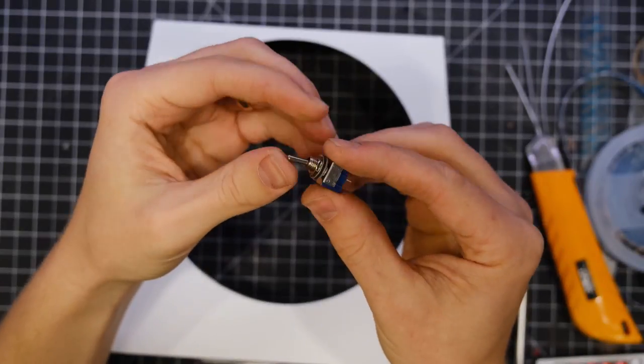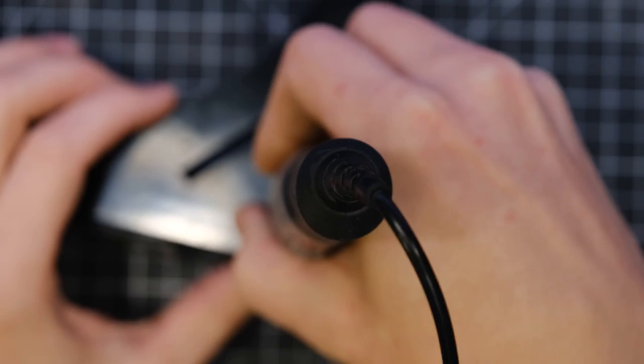I wanted to be able to turn this project on and off with this little toggle switch, so I used my Dremel to drill a hole through both the base and the styrene.